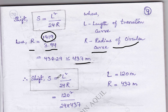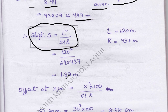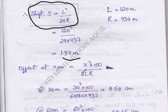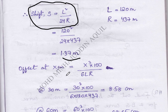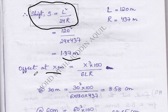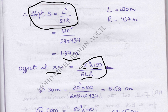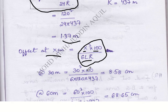Substituting all values in the shift formula, we get a shift value of 1.37 meters. Now we have to calculate the offset at every x meters. The formula for calculating offset at x meters is: offset equal to x cubed into 100 divided by 6LR.